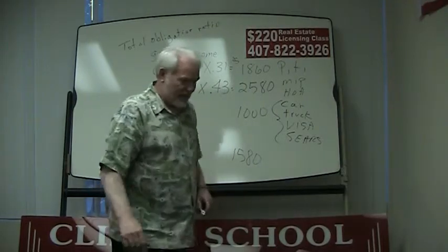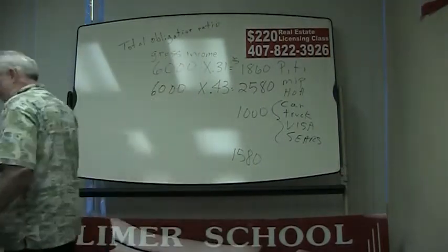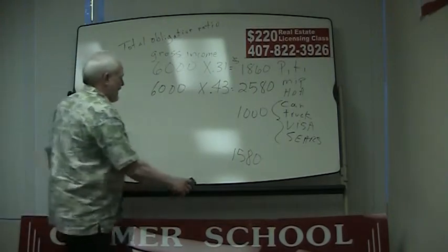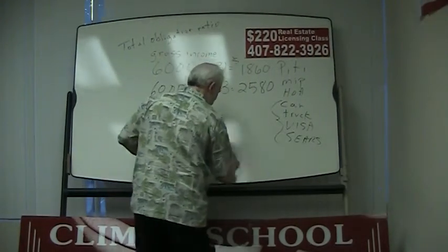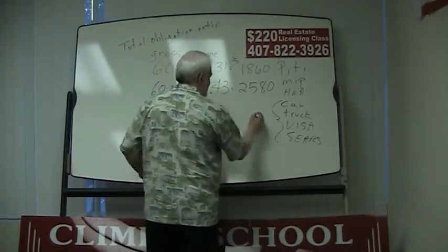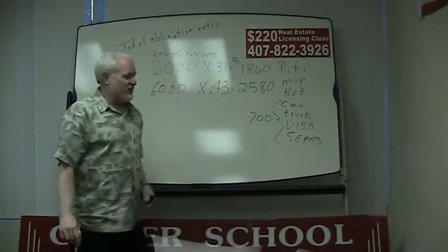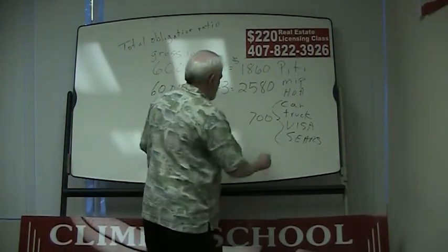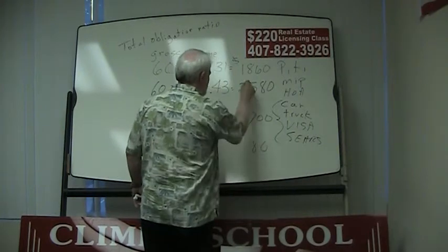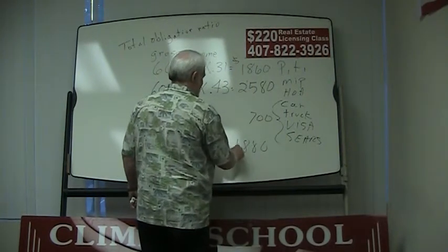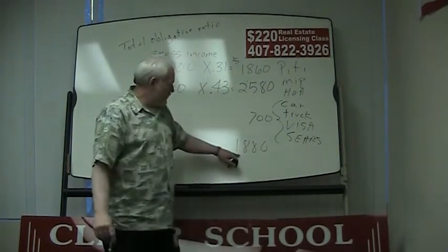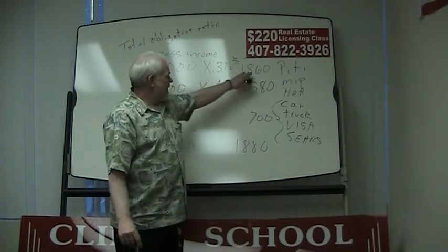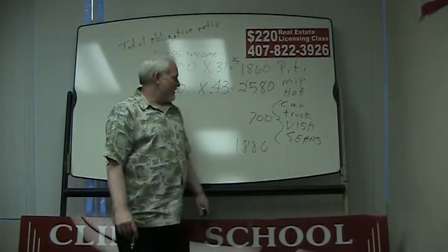Let's cut him a little slack and say he's only got 700 in car payment, truck payment, Visa bill, MasterCard, etc. So that brings him down to 1880. He can afford 1880, but his other limitation will be 1860.